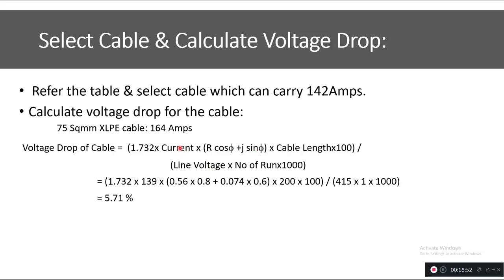The voltage drop formula requires resistance, reactance, line voltage, current, number of runs, and cable length of 200 m. Substituting the resistance and reactance values from the datasheet, with cosφ = 0.8 (and sinφ derived from it), the voltage drop for the 70 mm² cable calculates to 5.71%. Since this exceeds our 5% limit, we will not use the 70 mm² cable.